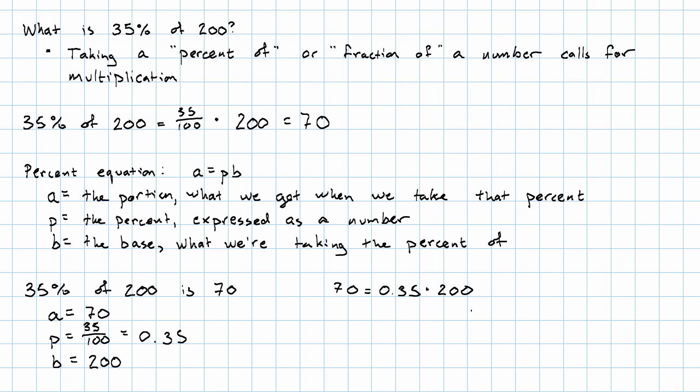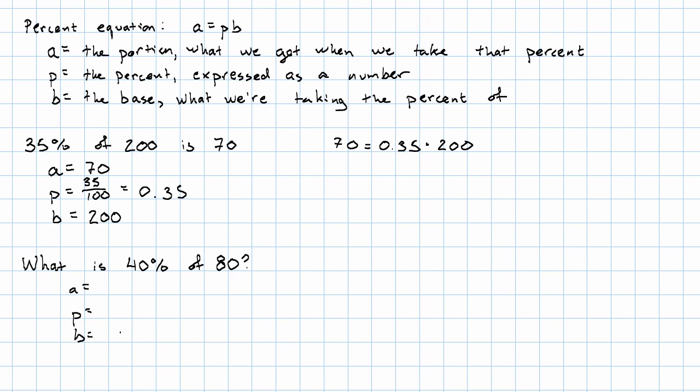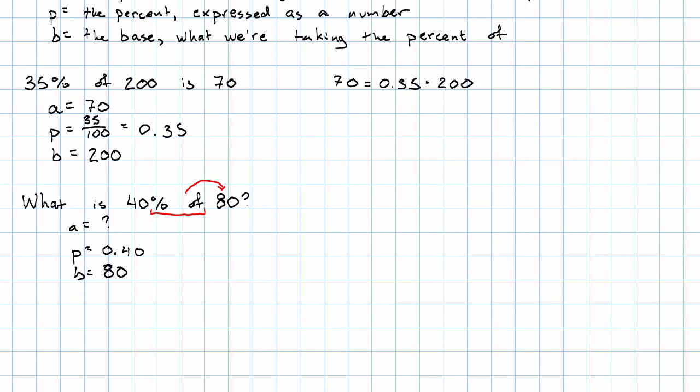Now the nice thing about describing this with an equation is that we're now prepared to ask questions about numbers other than the portion. So we can still answer questions like, what is 40% of 80? 40% is clearly the percent, so we'll take 0.40. It says percent of 80, so 80 is the base. And we want to know the amount. So we say A is 0.4 times 80, which is 32. 32 is 40% of 80.